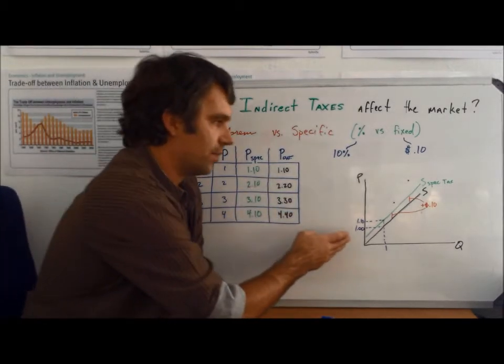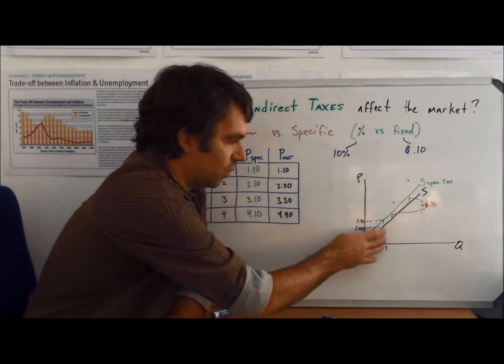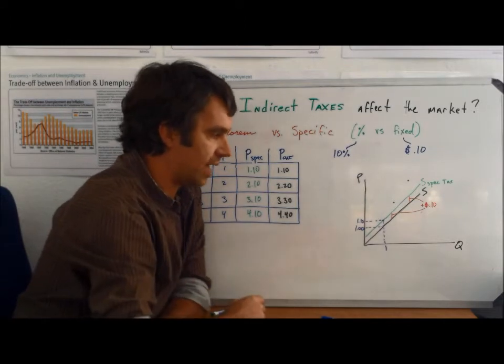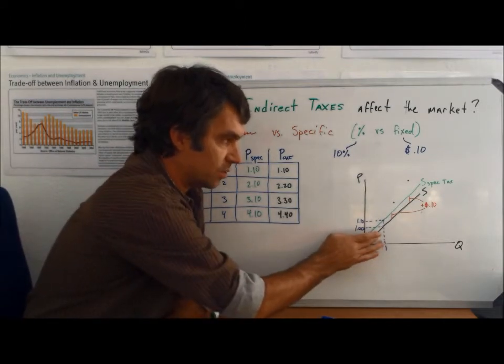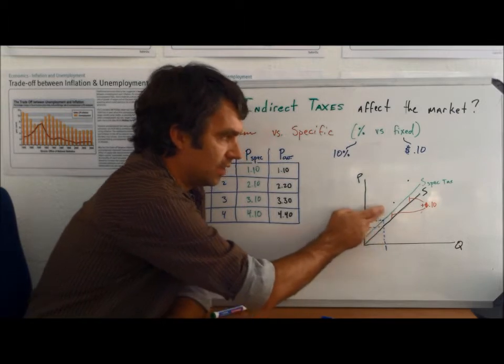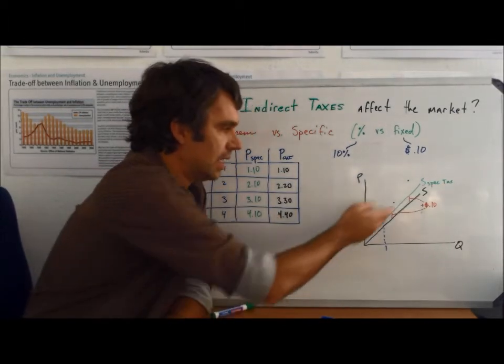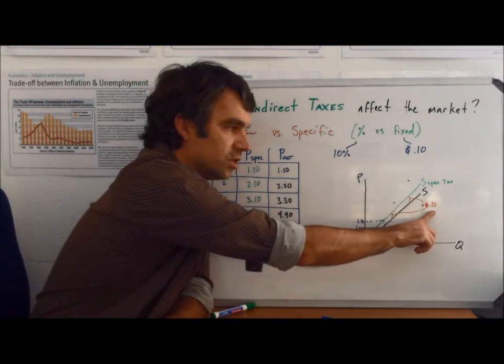When we diagram this with the specific tax, what we see is that the curve shifts up by the amount of the specific tax. So any difference between the original curve that's in black and the supply curve with the specific tax that's in green, any distance there should be equal to $0.10.